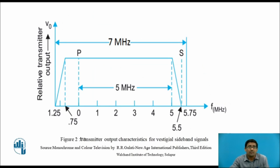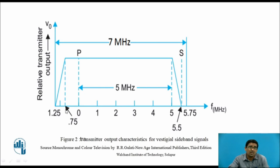Figure two shows the transmitted output characteristic for a vestigial sideband signal. This figure plots relative transmitter output versus frequency. The total bandwidth is 7 MHz, where P means picture carrier and S means sound carrier. The total effective bandwidth used is 5 MHz out of the 7 MHz. The relative transmitted output linearly increases from 0 to some extent in the range 0 to 0.75 MHz, then continues linearly to 5 MHz, after which it linearly reduces to 0 again at 5.5 MHz.